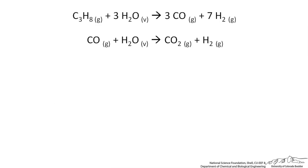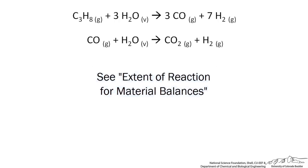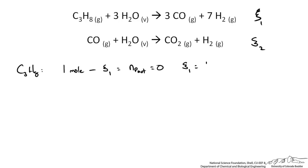Since we have two reactions, we need to choose an appropriate approach: atomic species balance, molecular species balance, or the extent of reaction method. With two reactions, we use the extent of reaction method, defining ψ₁ for the first reaction and ψ₂ for the second. For propane: 1 − ψ₁ = moles of propane out. Since propane is completely consumed, this equals 0, so ψ₁ = 1 mole.